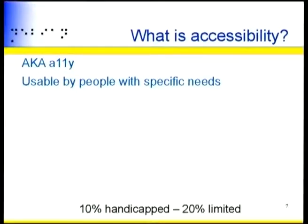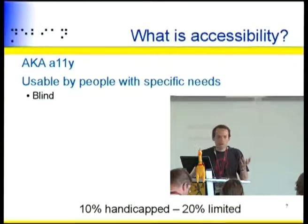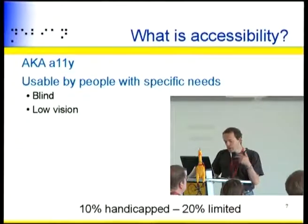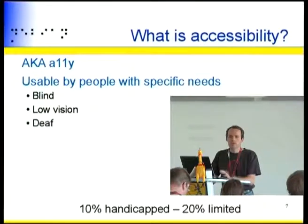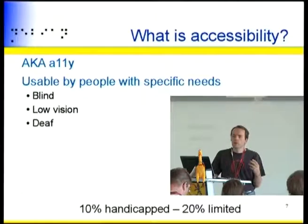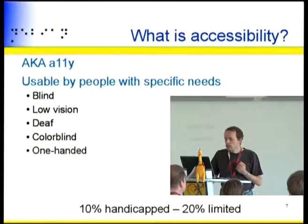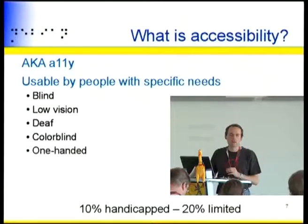So what is accessibility? It is contracted into A11Y. It means being usable by people with specific needs or specific conditions, or by anybody actually. The obvious cases are blind people, but also people with low vision — they can actually see the screen but not that well. Deaf people are not concerned with many things, but if you only signal something through noise, then they cannot get it. And colorblind, as I said.